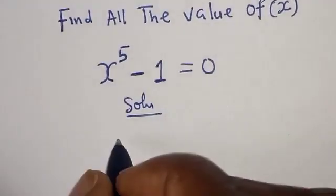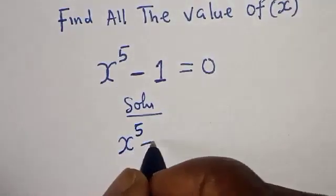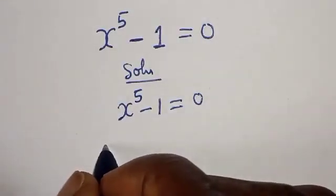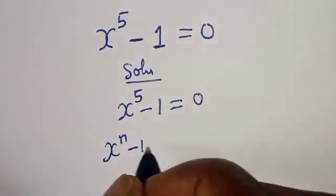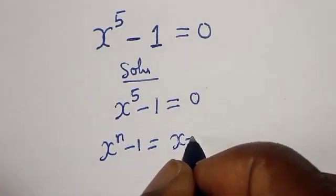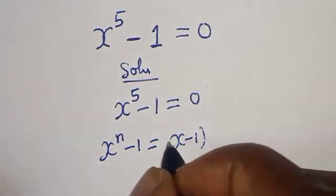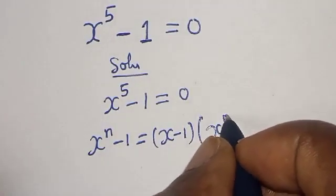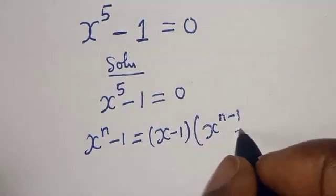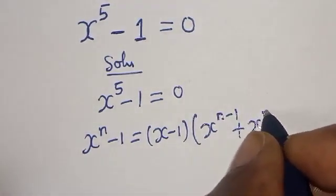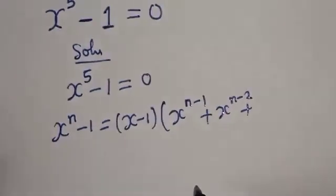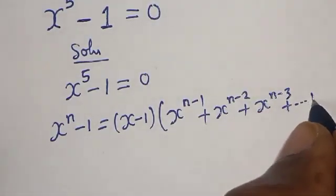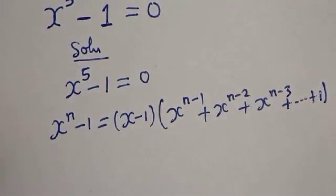We have the given equation x to the power of 5 minus 1 is equal to 0. Now take note that if you have x raised to power n minus 1, this is equal to x minus 1 times the bracket: x raised to power n minus 1 plus x raised to power n minus 2 plus x raised to power n minus 3 plus ... plus 1.